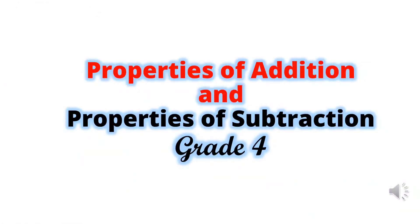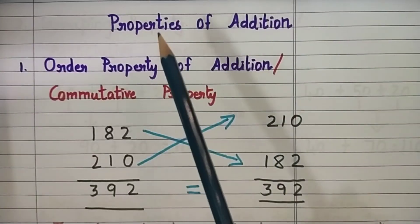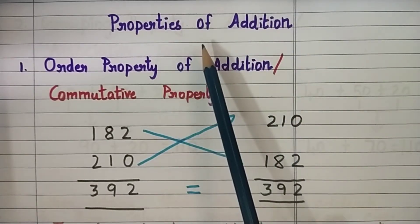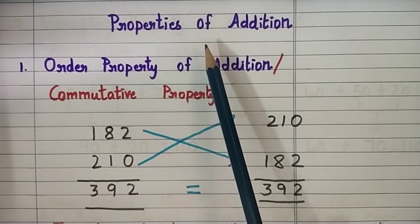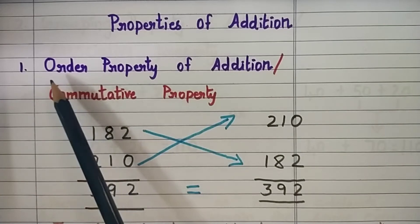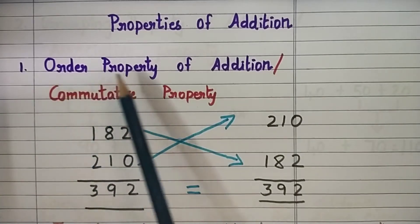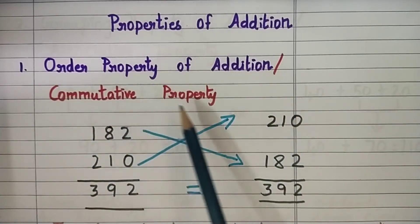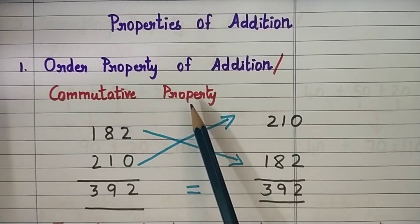In today's Math video class, we are going to learn about properties of addition and properties of subtraction. Properties of addition. Children, there are three properties of addition. Let us start with the first property: order property of addition, or you can call it the commutative property.